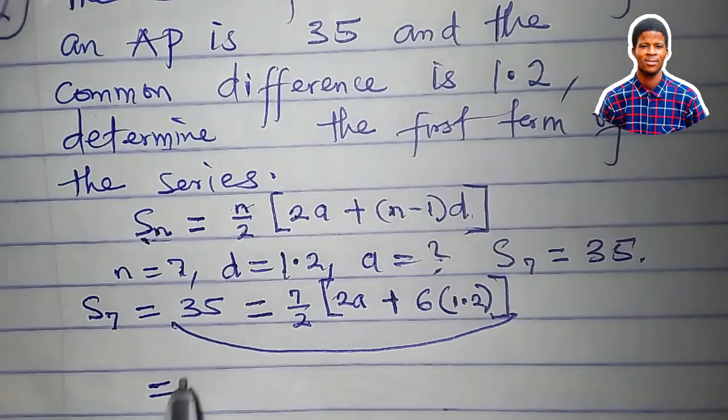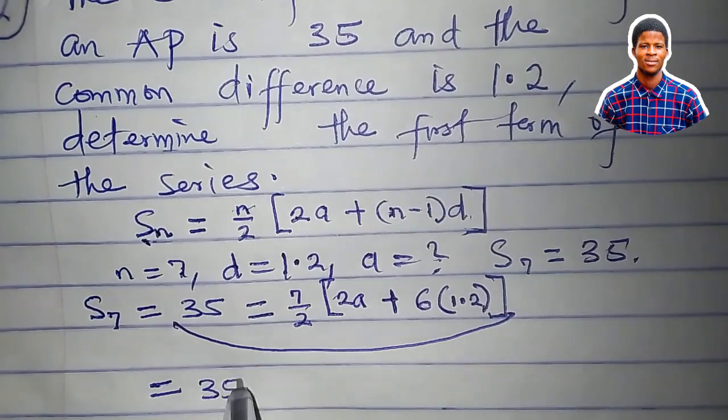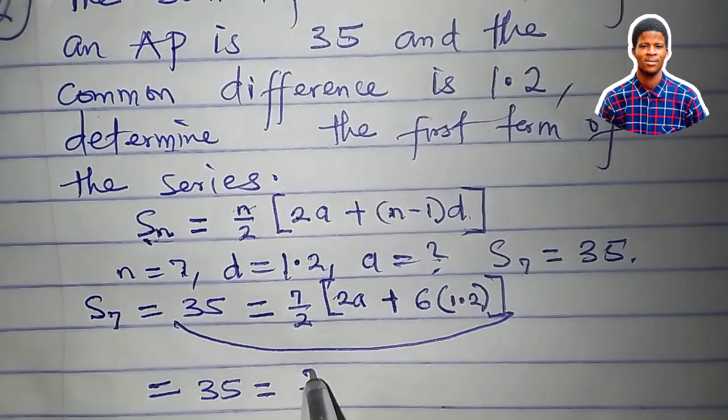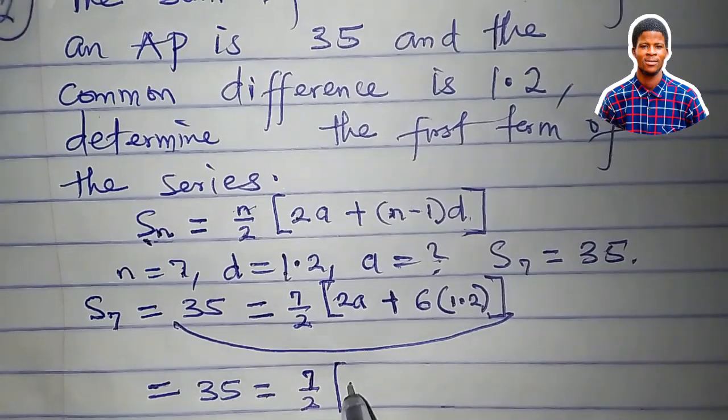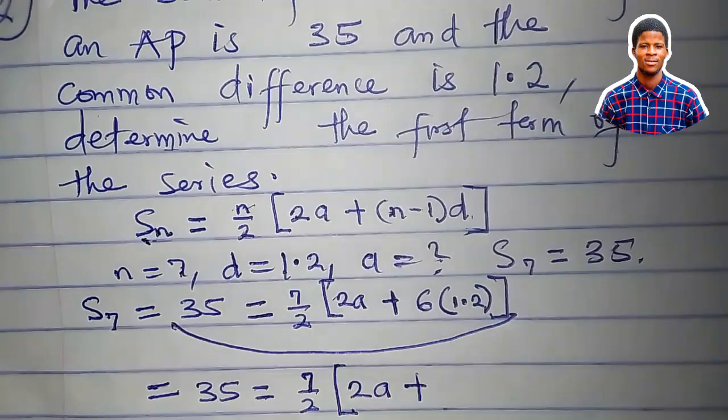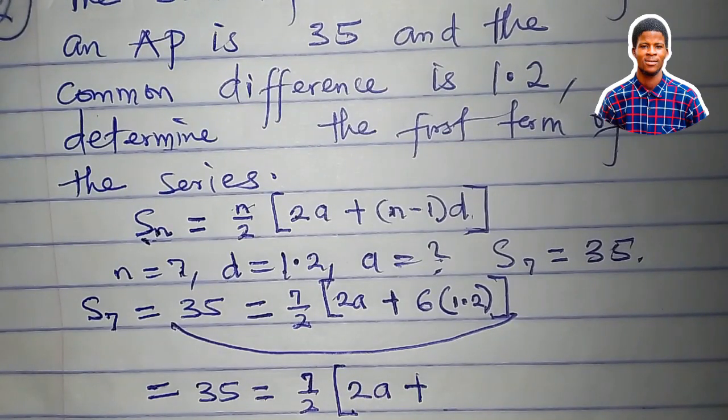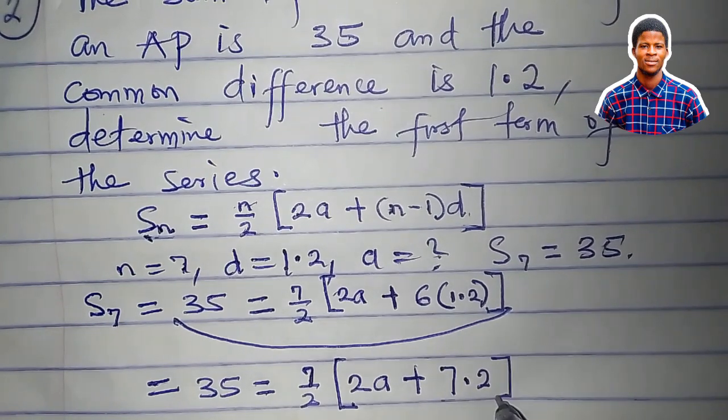We have 35, which equals 7 over 2, then 2a plus 6 times 1.2 is 7.2.